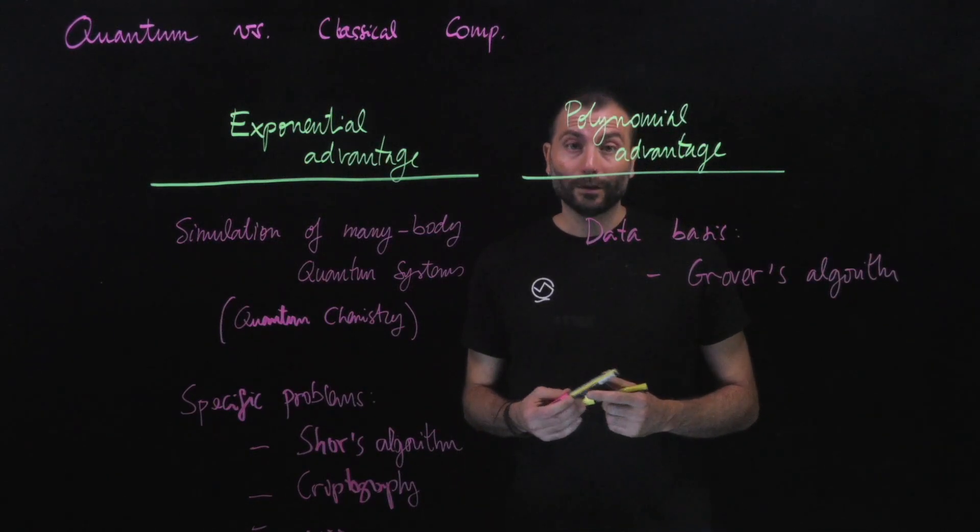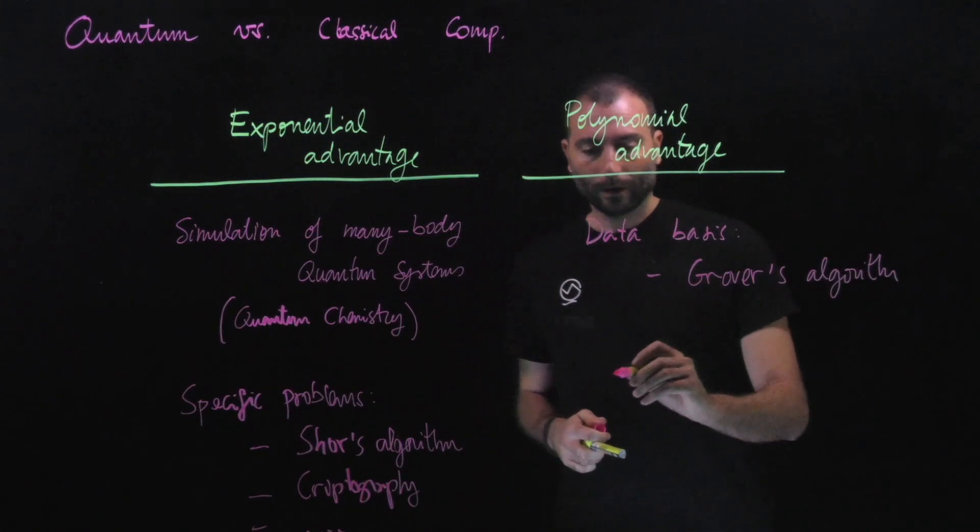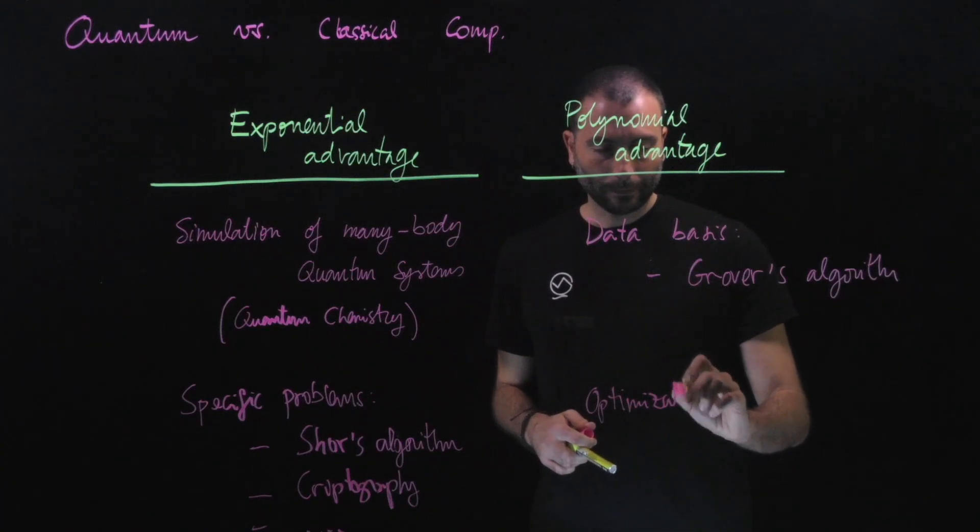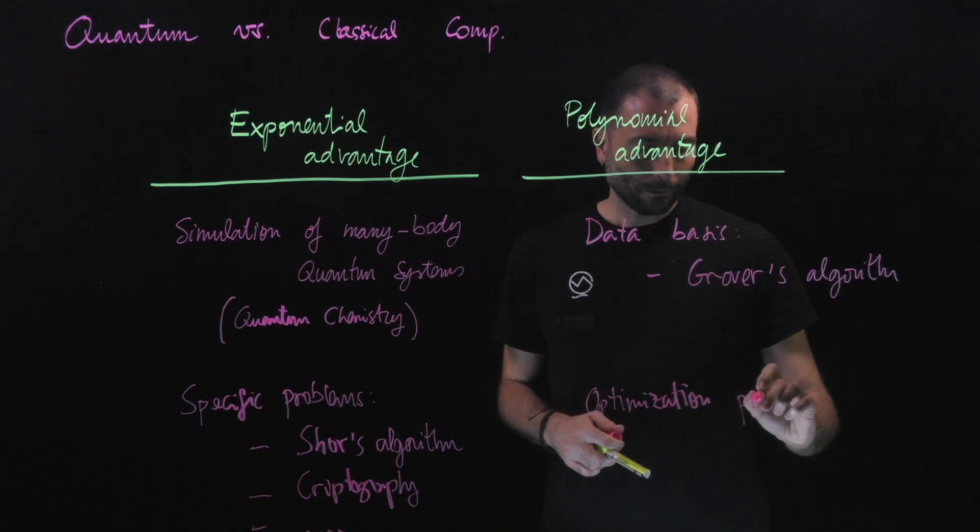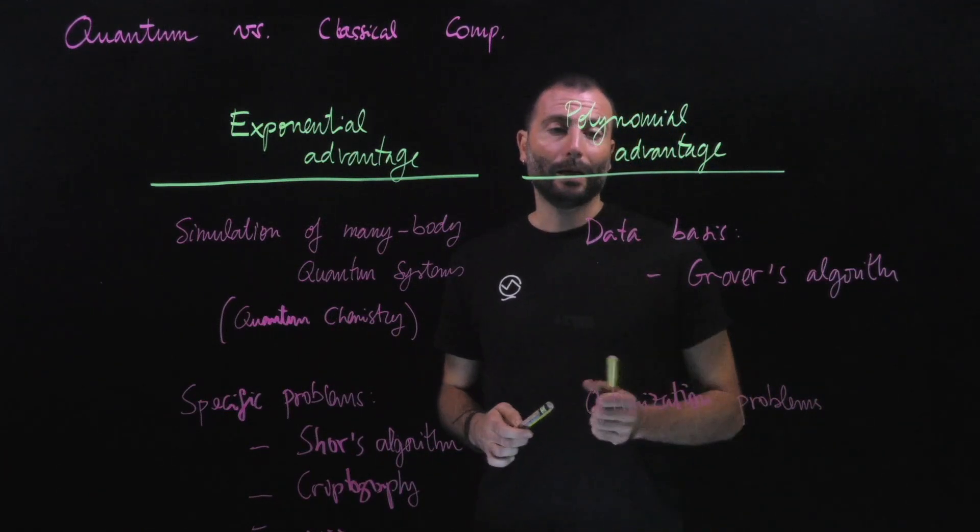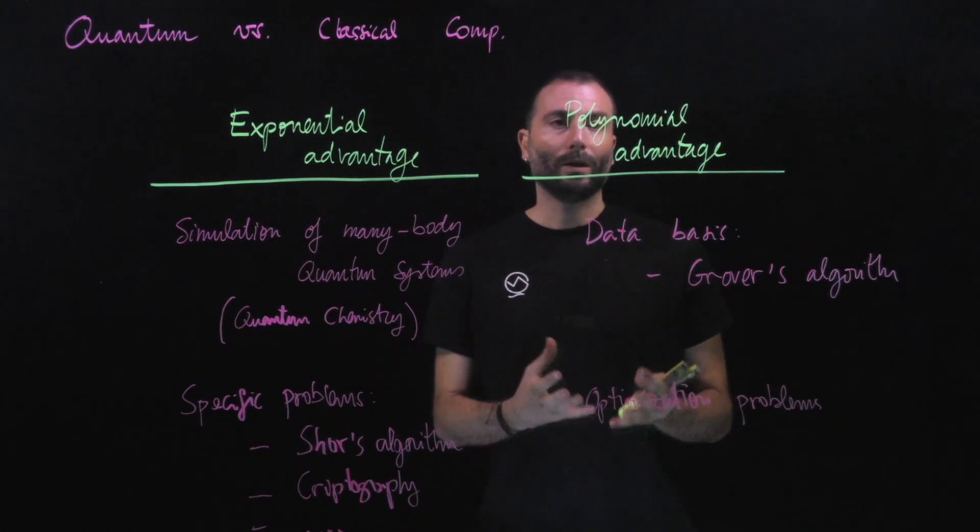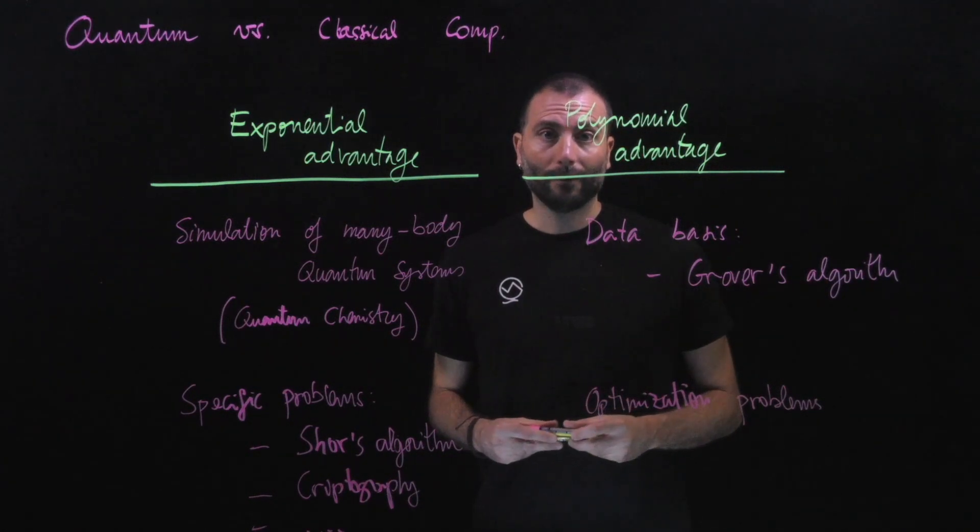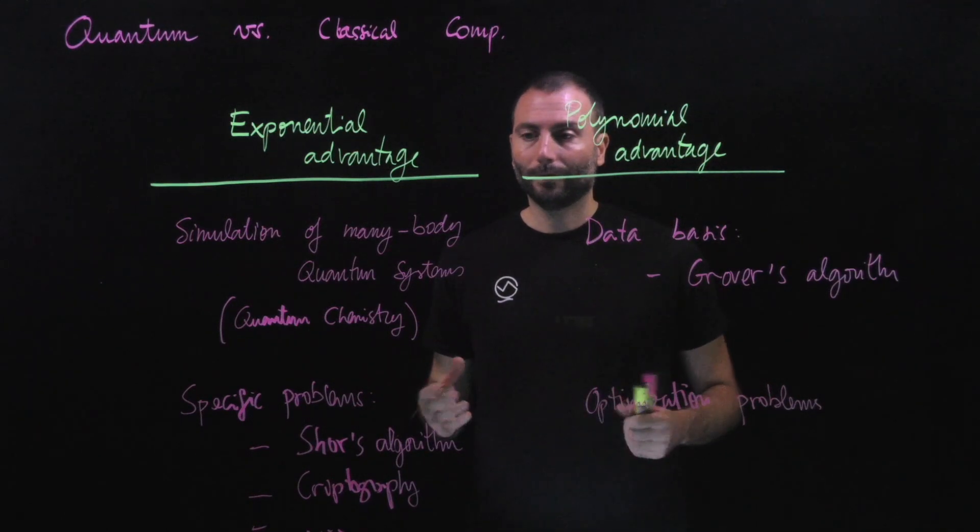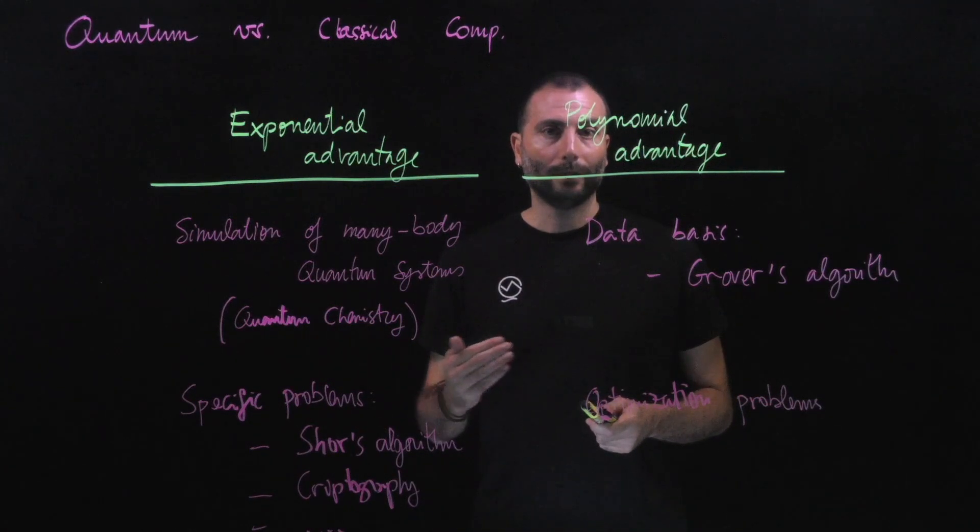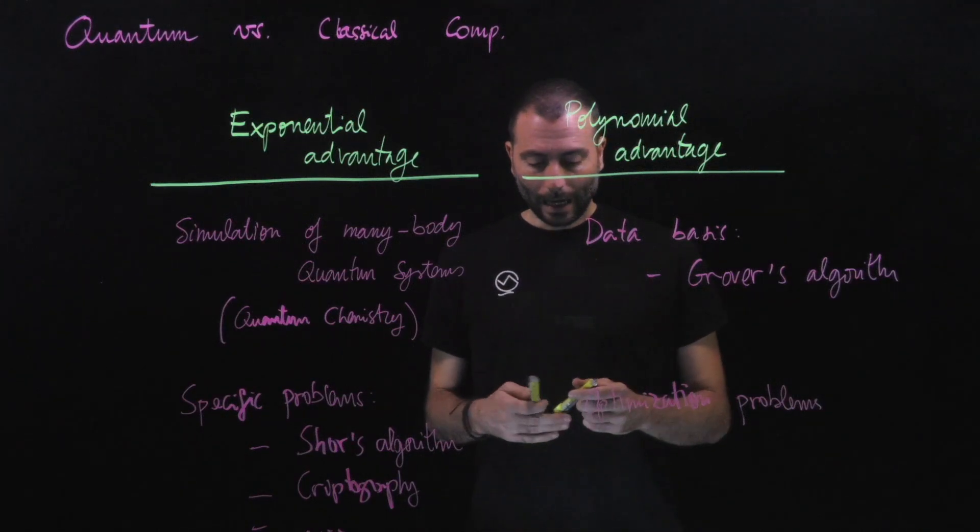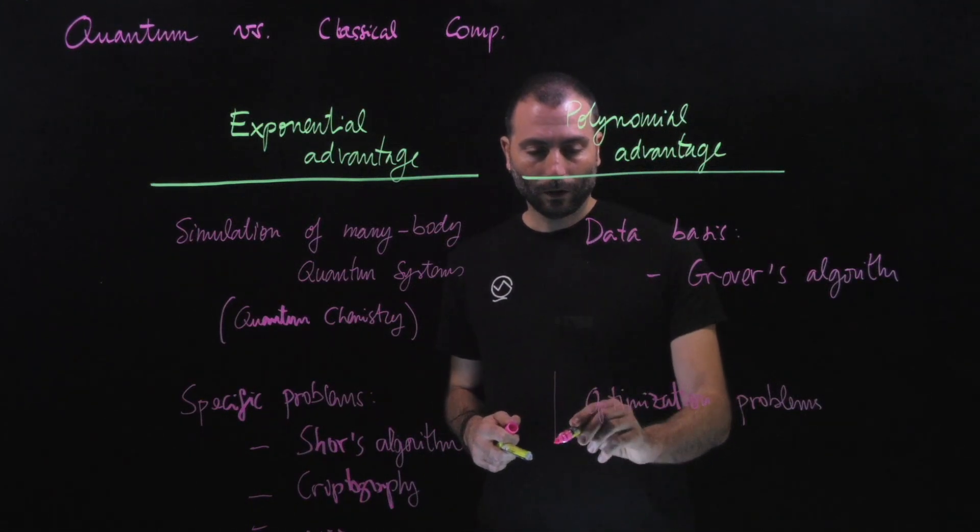I'm sure that there are many other applications in databases. And then what we have here is precisely the field of optimization. In optimization, we do expect a polynomial advantage. Maybe some people are disappointed about polynomial, but a polynomial advantage can be very, very important. If we reduce the power of our scaling from N to the cube to N, this can be a huge advantage, and this will be the goal of this course.